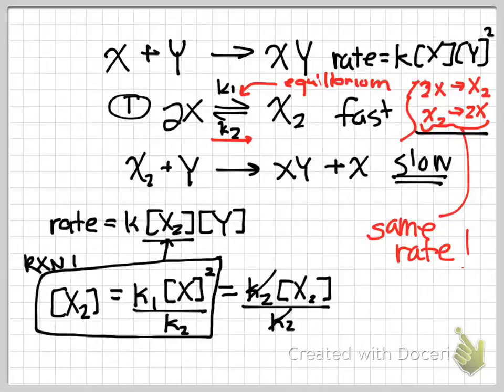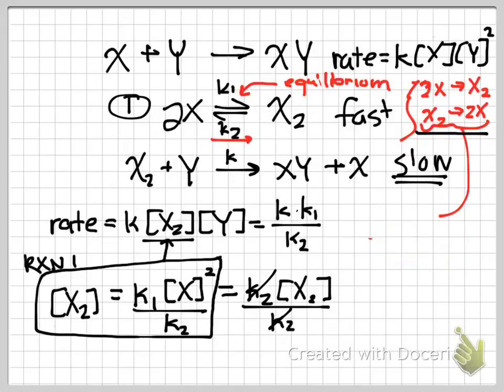And I can sub that in to my rate law here. So here now I get K times K1 over K2, I'll give myself a little more space here, times X squared Y.